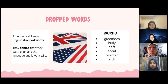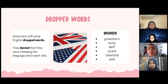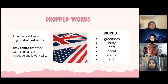Actually, the Americans felt that they kept the English language pure for 200 years by still using some of the old English words. Here are examples of English words that were still being used by Americans at that time: Greenhorn, Burly, Deaf, Skan, Talented, and Sikh. They denied that they were changing the language, and it went wild.